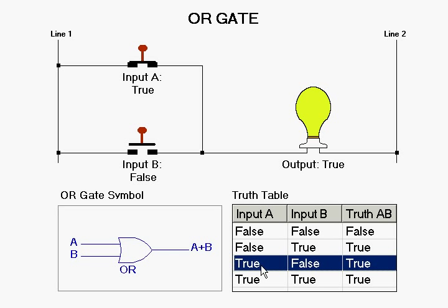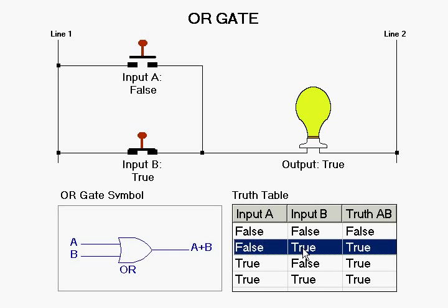If one of the inputs is TRUE, as this one here where A is TRUE, then the output will be TRUE. This is also true if input B is TRUE. So if either one or both inputs are TRUE, then the output will be TRUE.